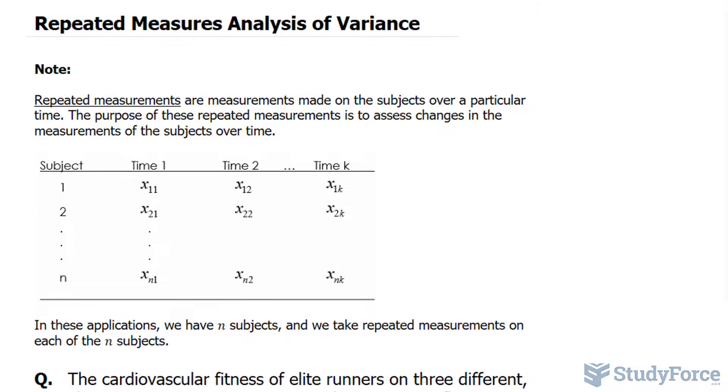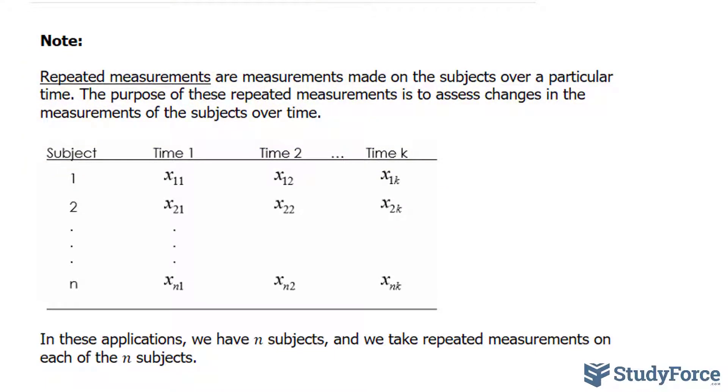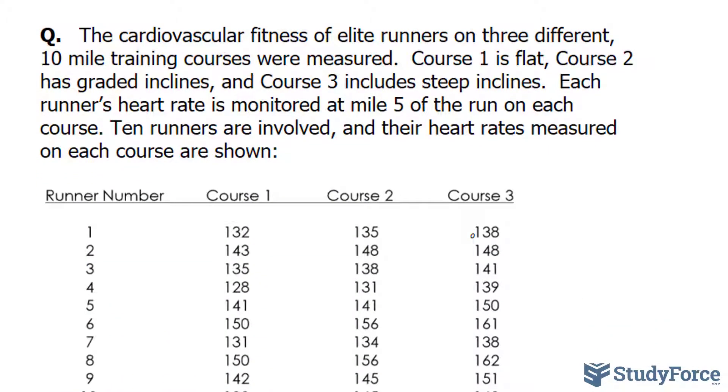But before we start, repeated measurements are measurements made on the subject over a particular time. The purpose of these repeated measurements is to assess changes in the measurements of the subjects over time. An example of what I mean is shown below. We have n number of subjects and measurements for each subject is taken over a period of time. To show you how this all works, we have the following question.